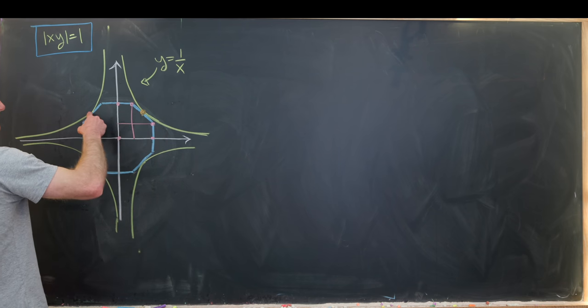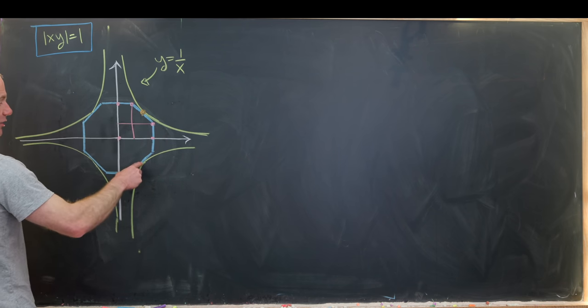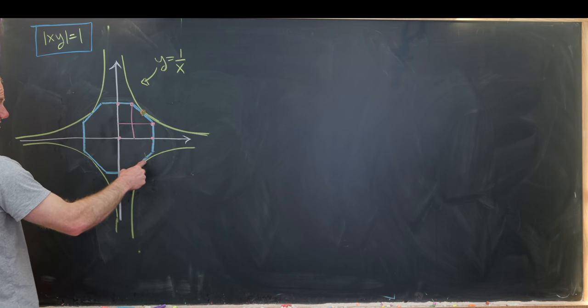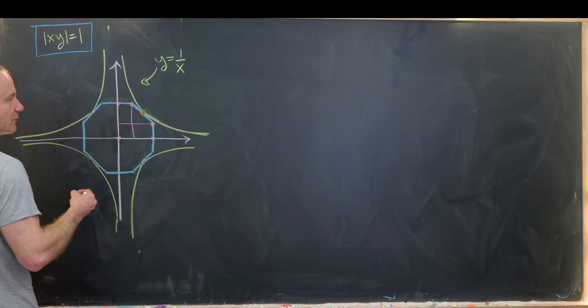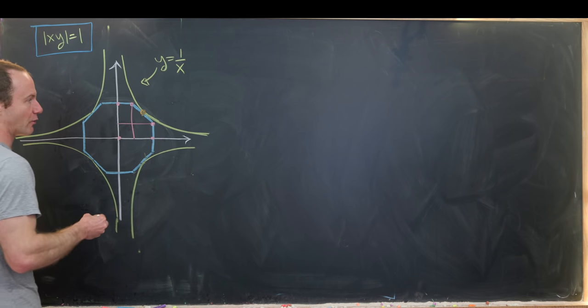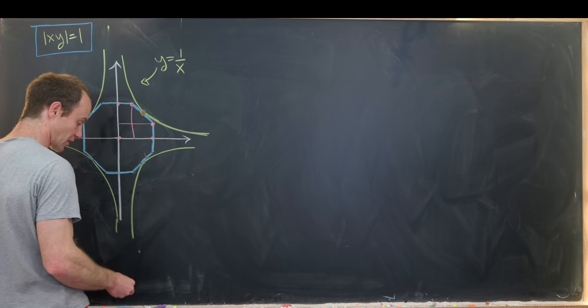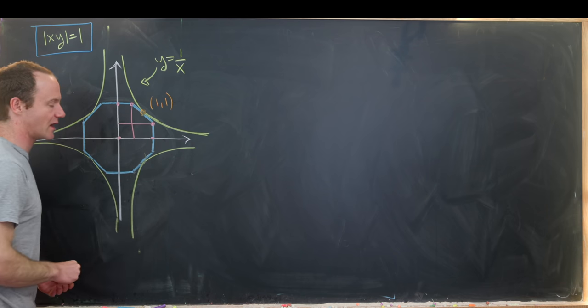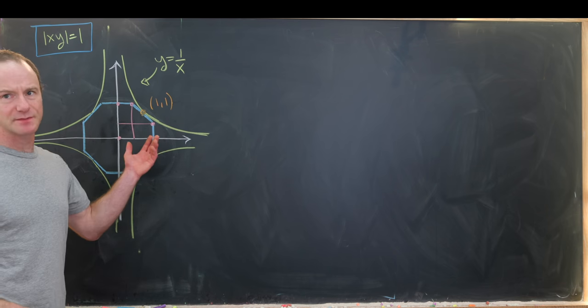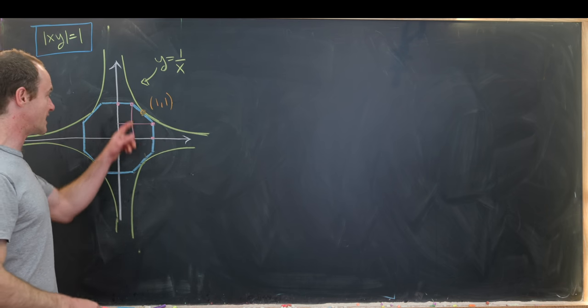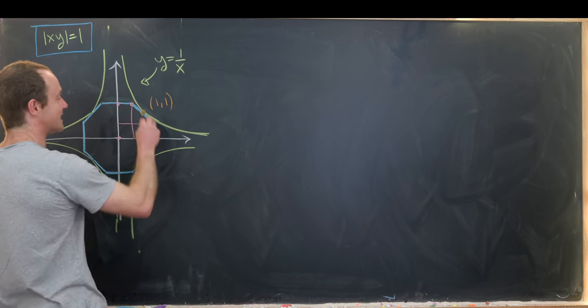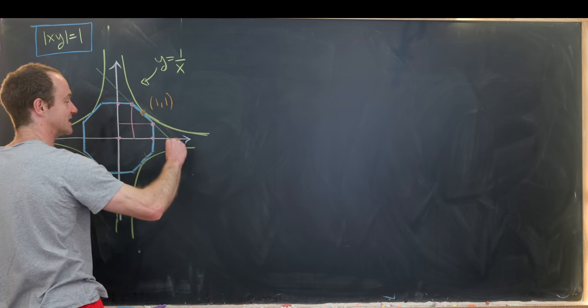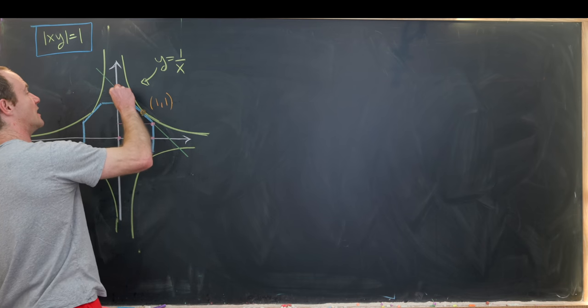Now first of all by symmetry we see the x coordinate and the y coordinate for this point has to be the same just by reflecting down across and so on and so forth. So since the x coordinate and the y coordinate have to be the same and it's on the curve y equals 1 over x, we know this coordinate right here is 1 comma 1. That helps us out quite a bit to find the equation of this tangent line. The tangent line which is really just the linear extension of this leg of the octagon.